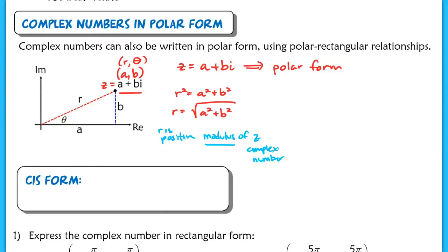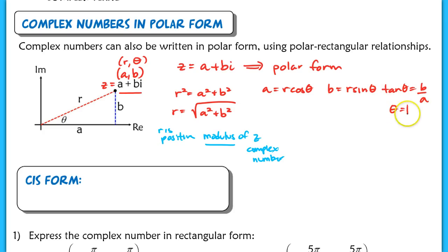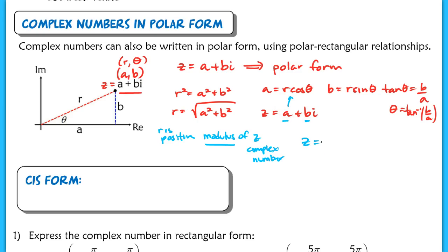We also have trig relationships from the diagram. Solving for A gives A equals R times the cosine of theta, and B equals R times the sine of theta. We also get tan(theta) equals B over A, or theta equals the inverse tangent of B over A. The reason we express A and B in terms of R and theta is so we can convert Z — written as A plus Bi in rectangular form — into polar form using only R and theta. We substitute: A becomes R cosine theta, so Z equals R cosine theta plus R sine theta times i.